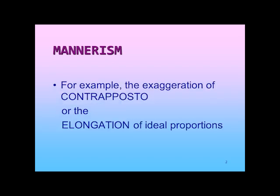For example, and you've seen the first one with Michelangelo, the exaggeration of contrapposto — these very twisting poses. We also see the elongation of ideal proportions: figures that are more than nine heads tall. Usually the ideal was either eight or nine heads tall. When figures become tall and slender, we call them elongated.